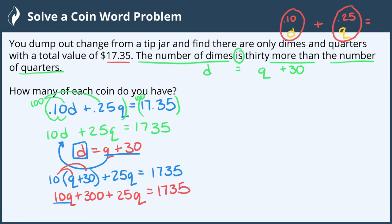Now we can combine like terms, which gives us 35Q plus 300 equals 1735.